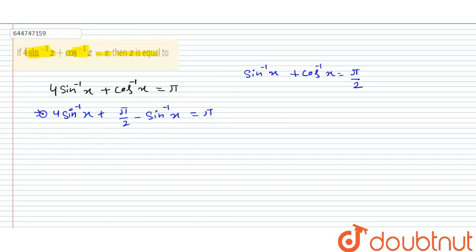Let's simplify it further. This 4 sin inverse x minus sin inverse x gives us 3 sin inverse x. Moving pi upon 2 to the right side, we get 3 sin inverse x equal to pi minus pi upon 2, which is pi upon 2.